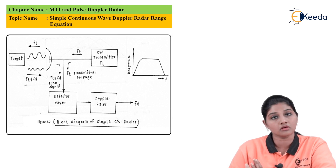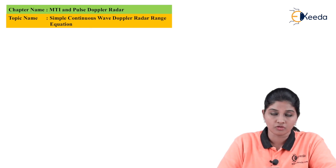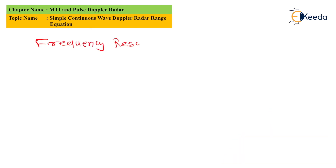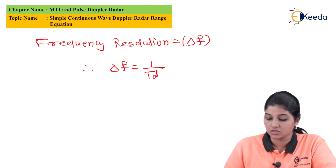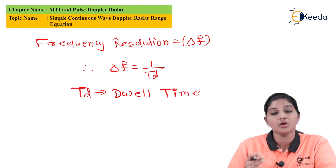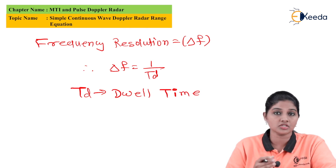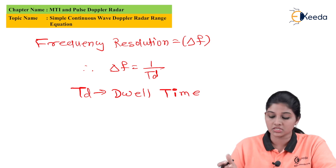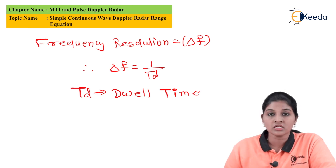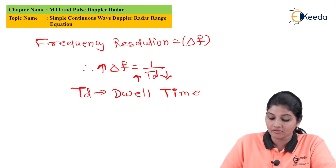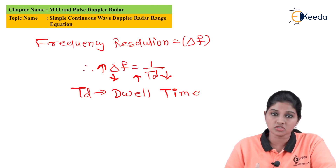Now let's derive the radar range equation for a continuous wave radar. First, let's define frequency resolution, given by the formula: ΔF = 1/TD, where TD stands for dwell time. The dwell time is the time taken by the signal to travel from transmitter to target (forward direction) and back from target to receiver (reverse direction). Since there is an inverse relationship between frequency resolution and dwell time, a smaller dwell time increases frequency resolution, and a higher dwell time decreases frequency resolution.